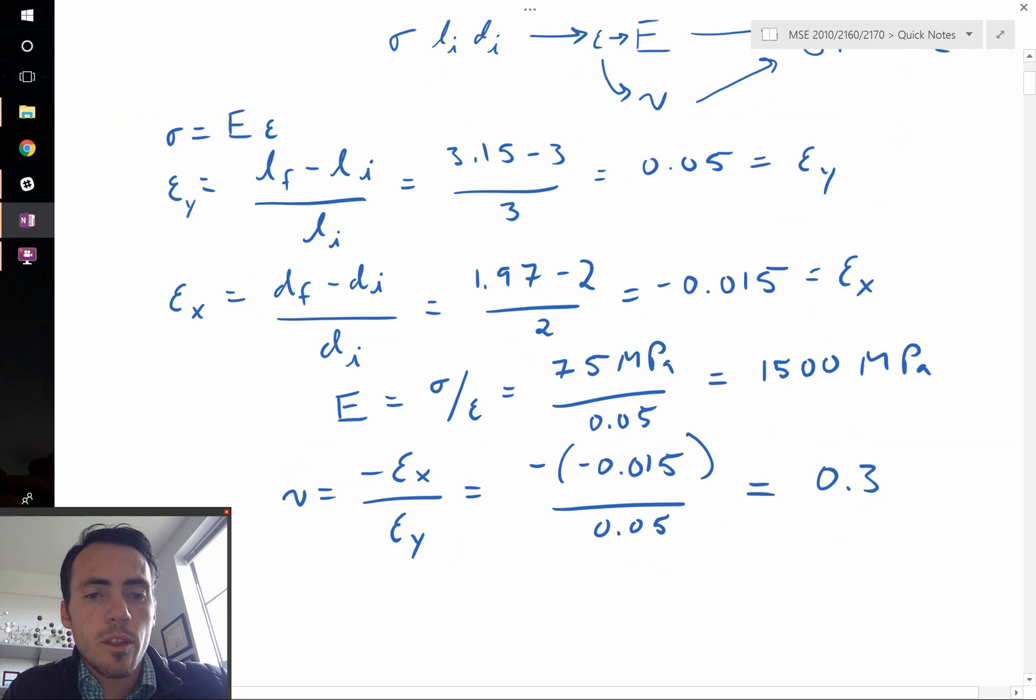So now that we have Poisson's ratio and Young's modulus, we can calculate shear modulus. Now this only works for an isotropic solid. If it's not isotropic, there's a different relationship we're going to have to use, but this is a simple scenario here. We know that if you had Young's modulus, that it would be equal to 2 times the shear modulus multiplied by 1 plus the quantity of our Poisson's ratio.